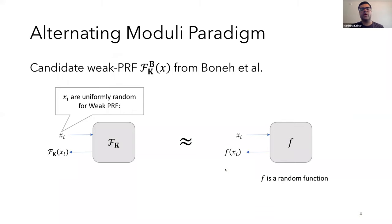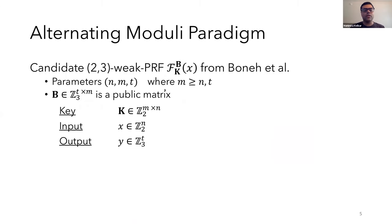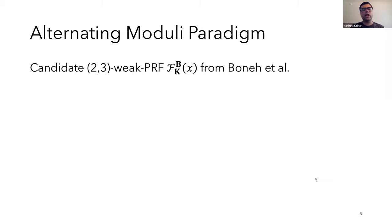So before I describe the contributions of our work, I'll set the stage with a candidate weak PRF proposed by Boneh et al. in this alternating moduli paradigm. So just as a quick reminder, a pseudorandom function is a keyed function that looks like a truly random function. So basically, it's difficult for a polytime adversary to distinguish between an oracle that uses a PRF and an oracle that uses a truly random function. And for a weak PRF in particular, there's an added restriction that inputs are chosen uniformly at random instead of allowing the adversary to pick them. So the main candidate proposed by Boneh et al. was the 2-3 weak PRF, which composes linear functions mod 2 and mod 3. This is parameterized by the length n of the input, the length m of the intermediate vector, and length t of the output. And they also use a public Z3 matrix B of size t by n.